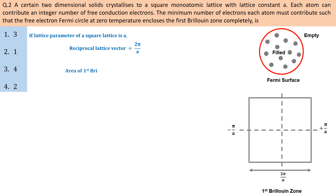The area of the first Brillouin zone is simply 4pi² divided by A². Looking at the center of the zone, the boundary is at a distance of pi/A, forming a circular boundary.